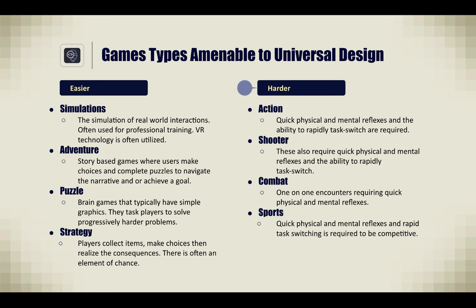Some of the harder games to make universal include action games, which require quick physical and mental reflexes and the ability to rapidly task switch. Shooter games also require quick physical and mental reflexes and rapid task switching. Combat games involve one-on-one encounters requiring quick physical and mental reflexes. And sports games require quick physical and mental reflexes and rapid task switching to be competitive.